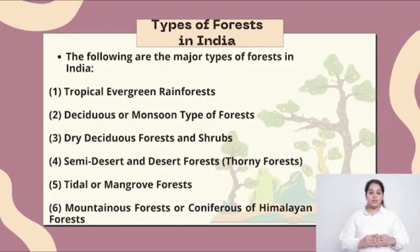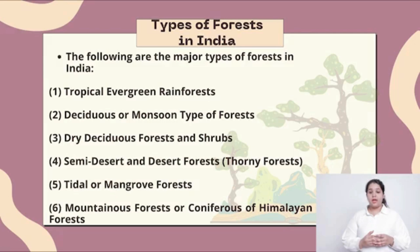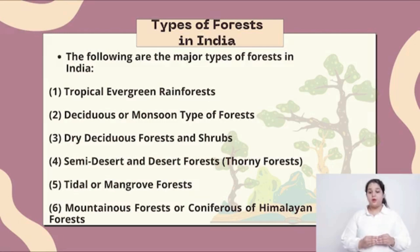Types of forest in India. The following are the major types of forest in India: tropical evergreen rainforest, deciduous or monsoon type of forest, dry deciduous forest and shrubs, semi-desert and desert forest, tidal or mangrove forest, and mountainous or coniferous Himalayan forest.